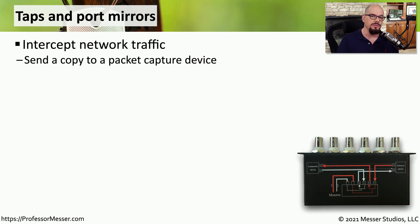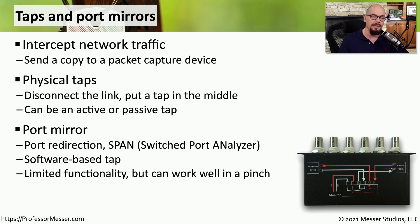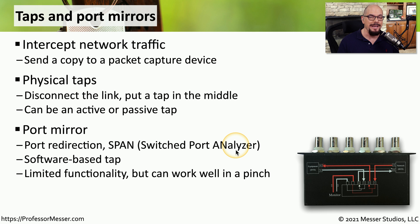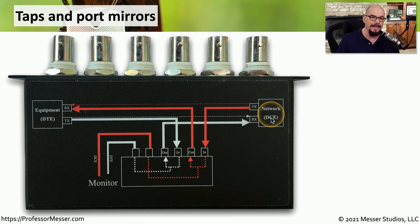Network administrators have always taken advantage of taps and port mirrors to properly manage the network. These are also a security concern, especially if an unauthorized third party adds a tap to your network. Physical taps allow someone to disconnect a link, put the tap in the middle of that link, and receive a copy of all traffic going over the network. A port mirror is often a software-based tapping mechanism built into a switch — sometimes referred to as port redirection, or in the case of a Cisco switch, a SPAN or Switched Port Analyzer. Here's an example of a physical tap — this is a DS3 tap with two sides: the DTE side, for data terminal equipment, and the network or DCE side, for data communications equipment.